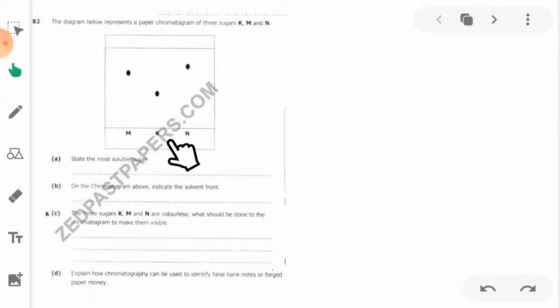The most soluble sugar is the one that has moved a lot, the one that has moved a longer distance than the others. So in this case, our answer is N. N is the most soluble sugar because it has moved a longer distance than the other sugars.